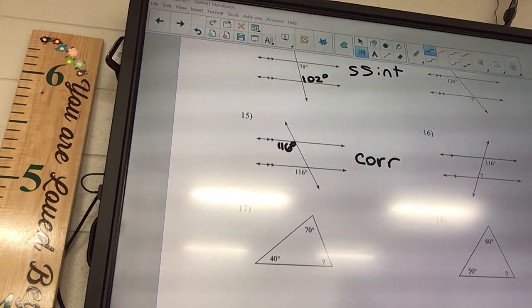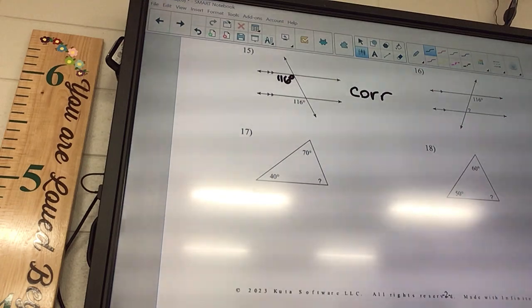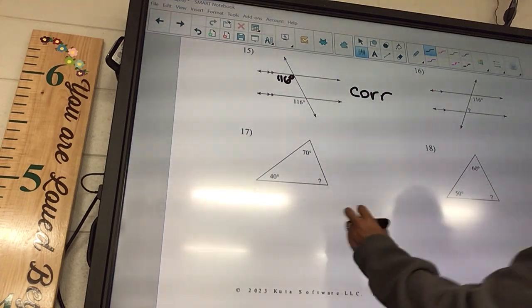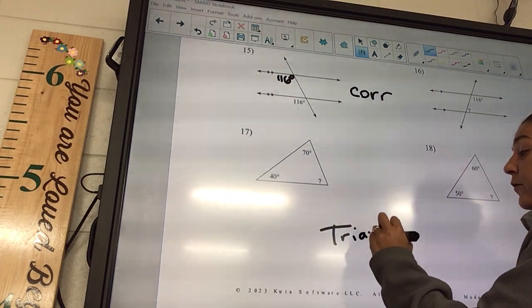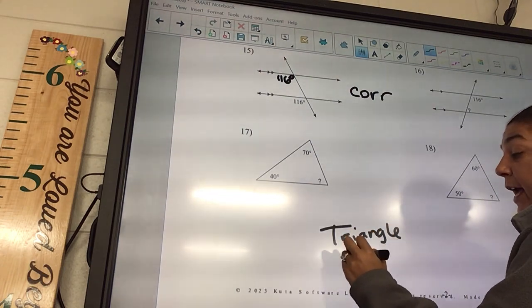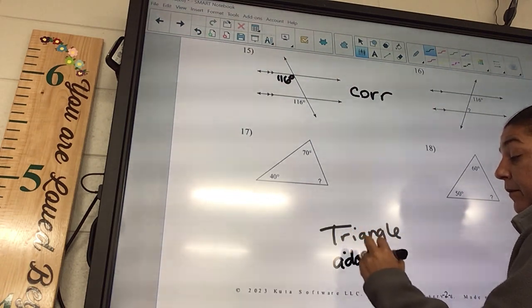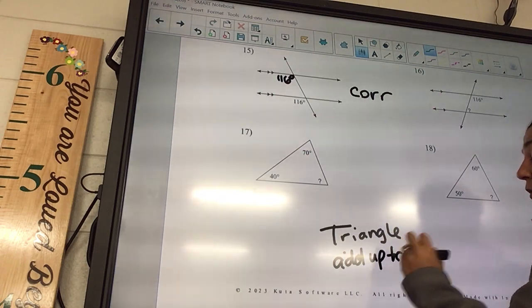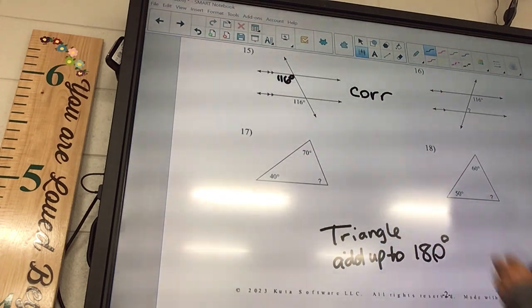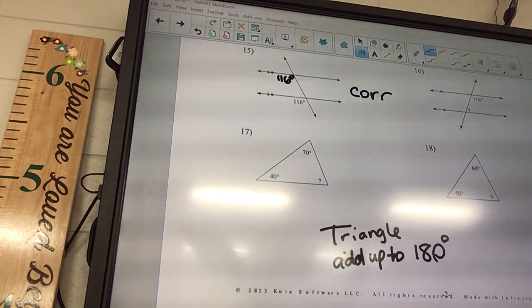Okay, 17 and on are all of these like types of triangles. How much does a triangle equal? Yeah, so a triangle adds up to 180 degrees. No matter what type of triangle, no matter if it's this big or this small, they add up to be 180. So you're going to say 180 minus 70 minus 40. 70, somebody agree with that?